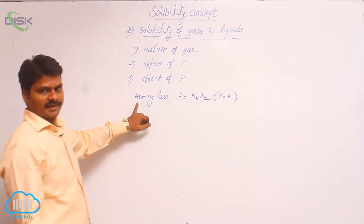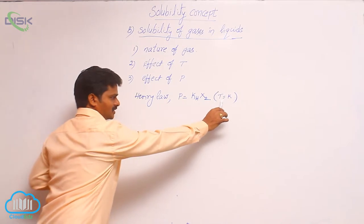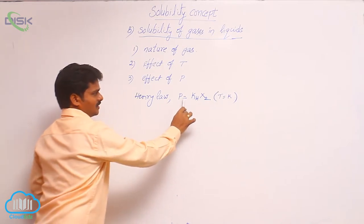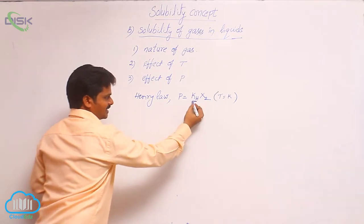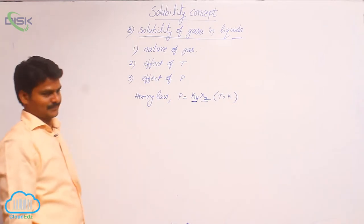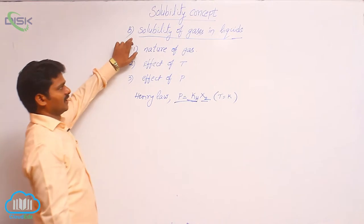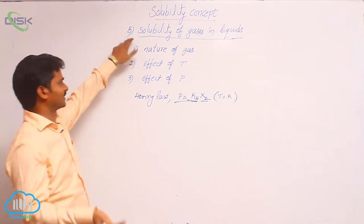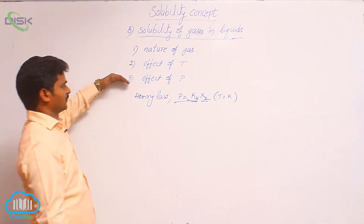Henry's law can be stated as: at constant temperature, equilibrium pressure is equal to the product of Henry's law constant and mole fraction of the gas dissolved. The solubility of gases in liquids depends on three factors: nature of the gas, effect of temperature, and effect of pressure.